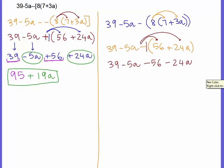Combine like terms. 39 has no a. Negative 56 has no a. So, that would be 39 minus 56, which is negative 17.